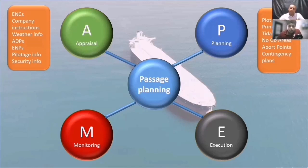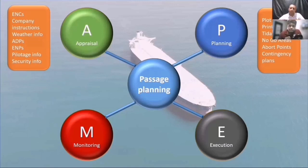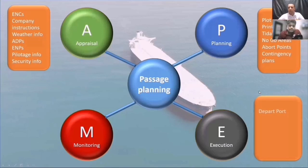Contingency plans: if something goes wrong during your passage — an engine failure or similar — there should be contingency anchorages or safe berths which you have identified. Even when you fly an airplane, airlines identify contingency airports. Same thing for us — we should identify areas where we can go and anchor. And remember, every ship will be different. If you are on a small ship, your anchorage area will be different than on a big ship. If you are loaded, your contingency anchorage will change compared to ballast. Don't confuse passage plan contingency plans with fire or other emergency contingency plans — here we are specifically talking about passage plan contingency plans.